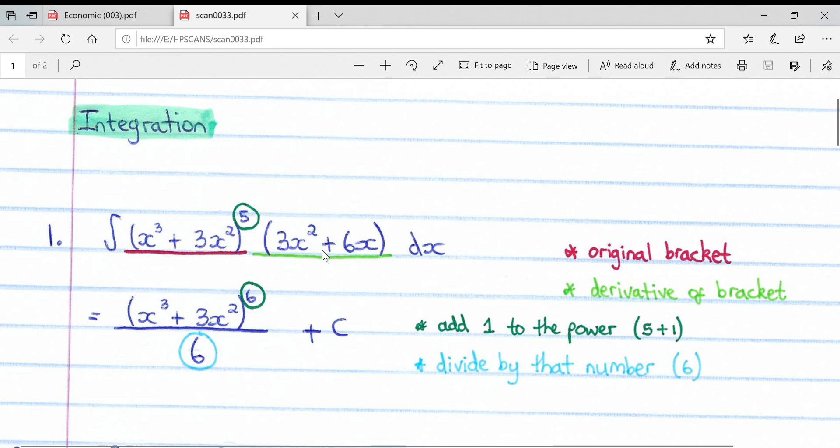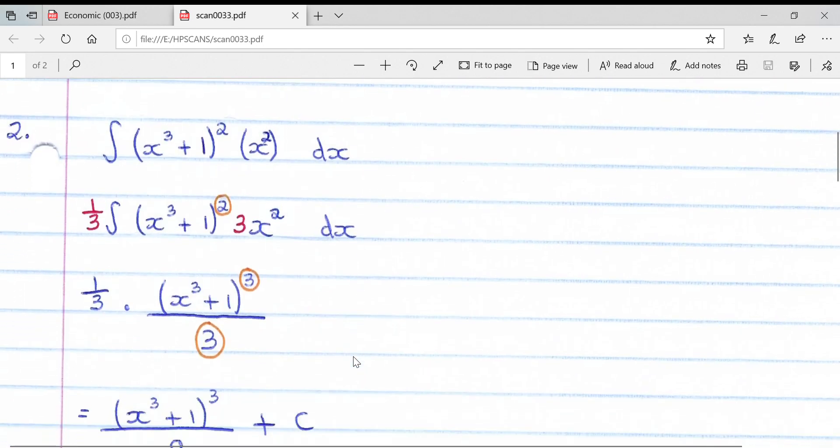This brings me to explaining the first rule: if you have the derivative of what's inside the bracket alongside the original bracket to any power, you can simply rewrite the original bracket. You bring that down, add 1 to the power so it goes from 5 to 6, and divide by the number you now have, which is 6. Then we always add c. That is the fundamental rule for integration.